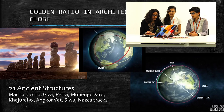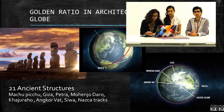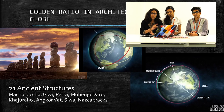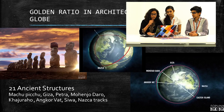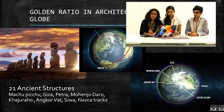Apart from that, there are 21 ancient structures around the globe in golden ratio. They form a circular spiral around the globe: Giza, Petra, Mohenjo-Daro, Khajuraho, and Nazca tracks.